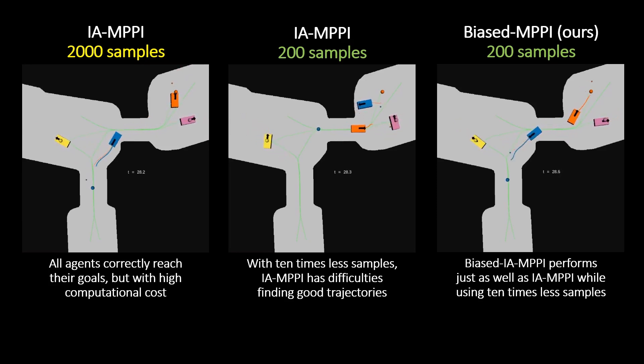In the video, we see that our approach can solve the interaction while using 10 times fewer samples compared to the original MPPI approach. This experiment demonstrated that our proposed biased sampling scheme is significantly more sample efficient.